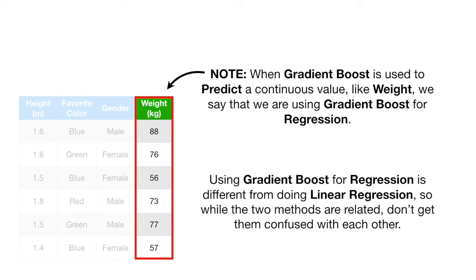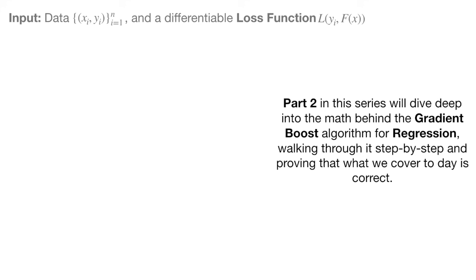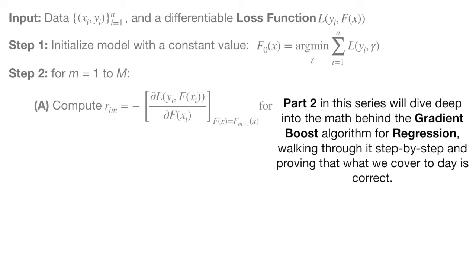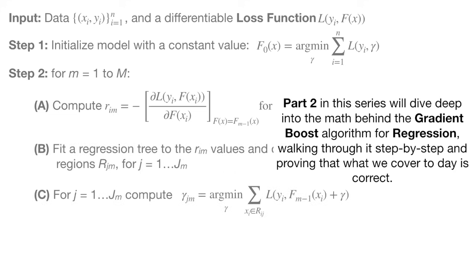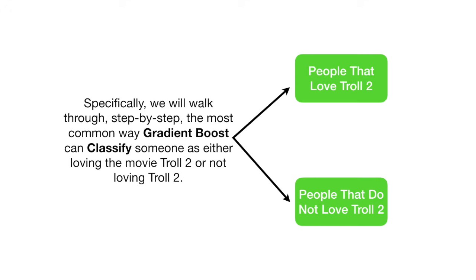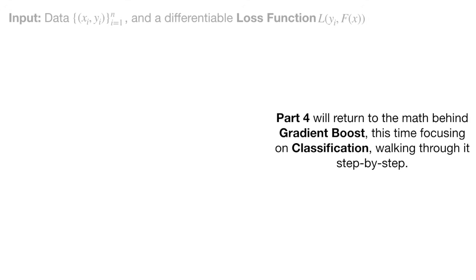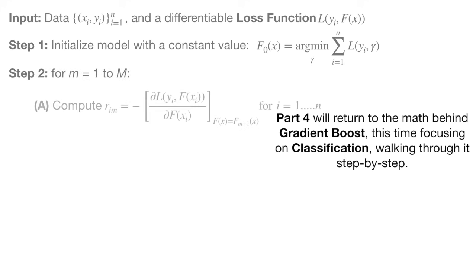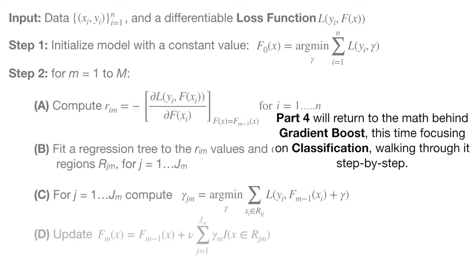Using Gradient Boost for regression is different from doing linear regression, so while the two methods are related, don't get them confused with each other. Part two in this series will dive deep into the math behind the Gradient Boost algorithm for regression, walking through it step by step and proving that what we cover today is correct. Part three shows how Gradient Boost can be used for classification — specifically, the most common way Gradient Boost can classify someone as either loving the movie Troll 2 or not. Part four will return to the math behind Gradient Boost, this time focusing on classification, walking through it step by step.